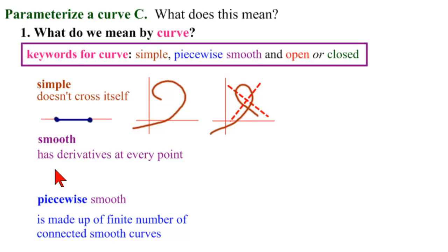What else do we need? We need smooth. That means it has to have derivatives at every point. Well, we don't actually have to have it totally smooth, but we need it to be piecewise smooth. So it has to be made up of a finite number of connected smooth curves.